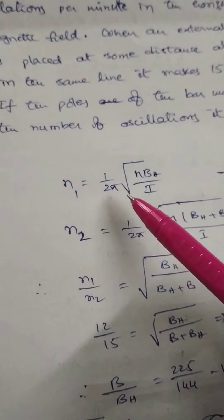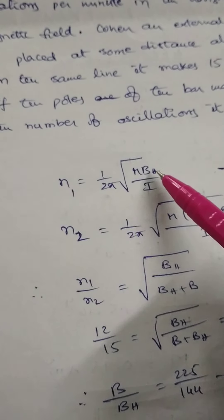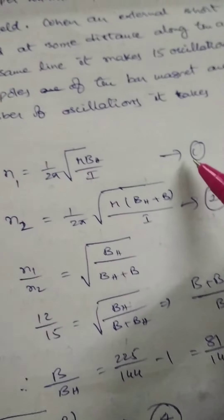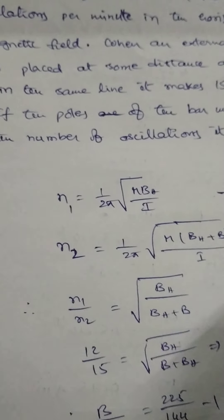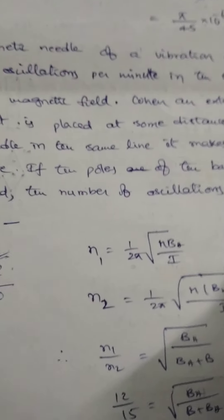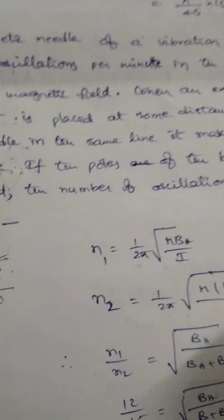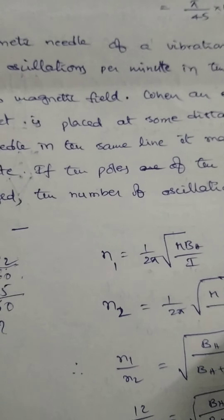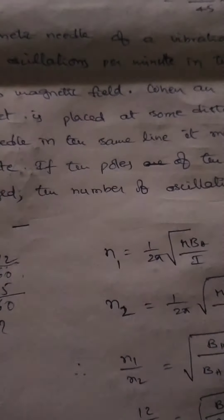Let us find the value of n3. n1 = (1/2π)√(MB/I) — let this be equation 1. In the second case, a bar magnet is placed along the axis of the needle.